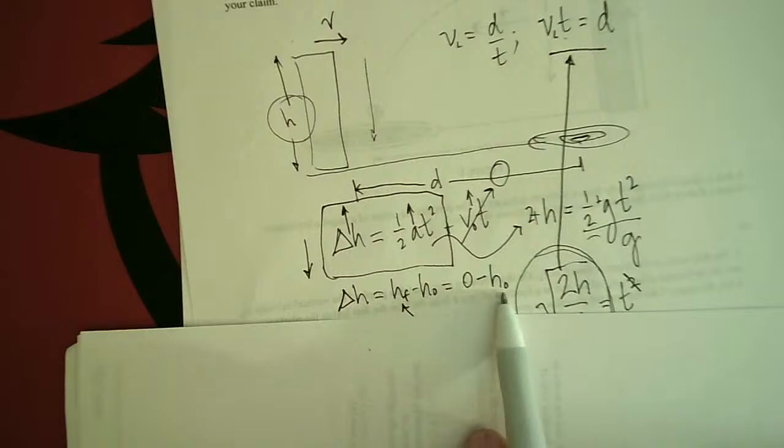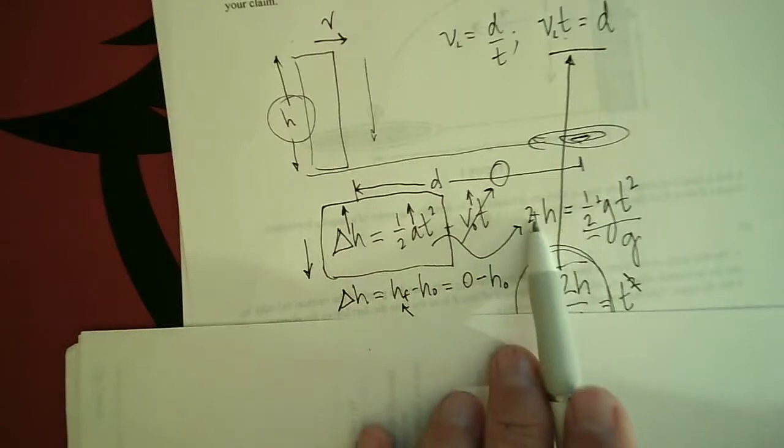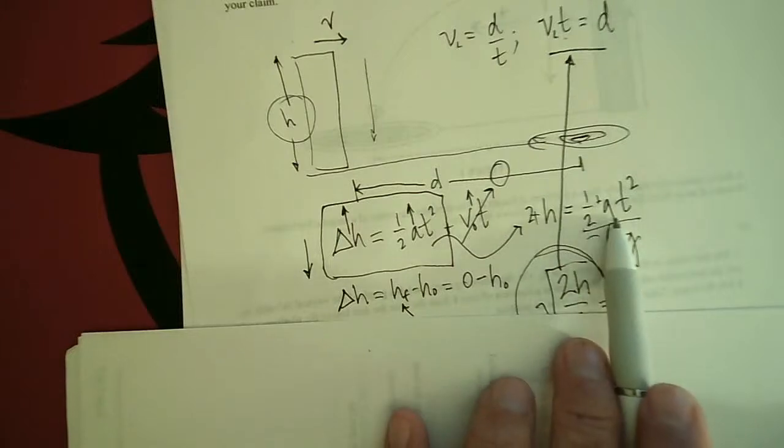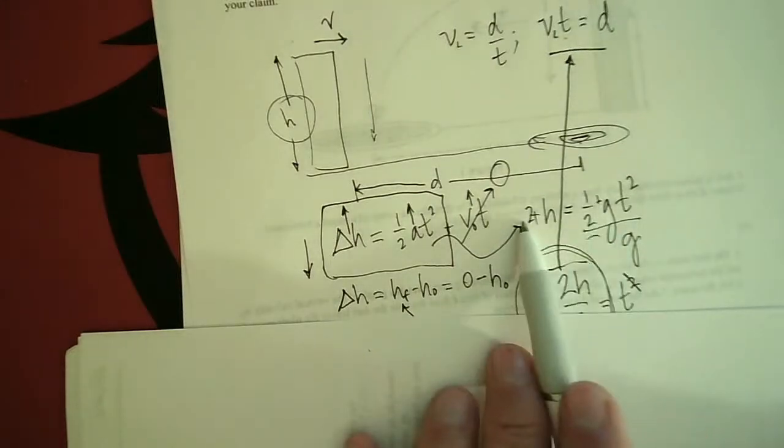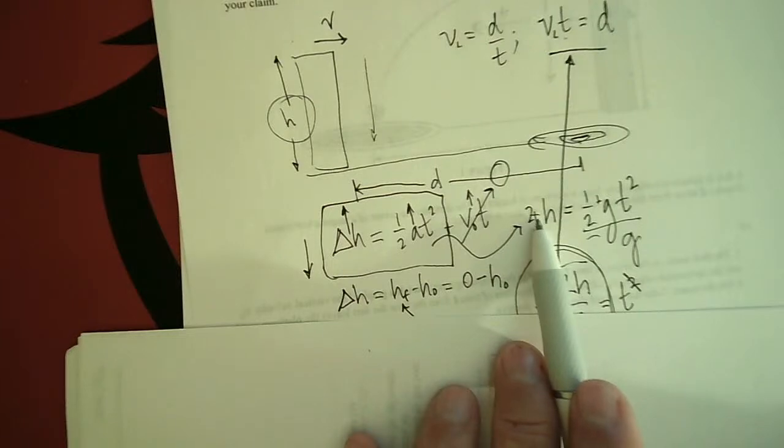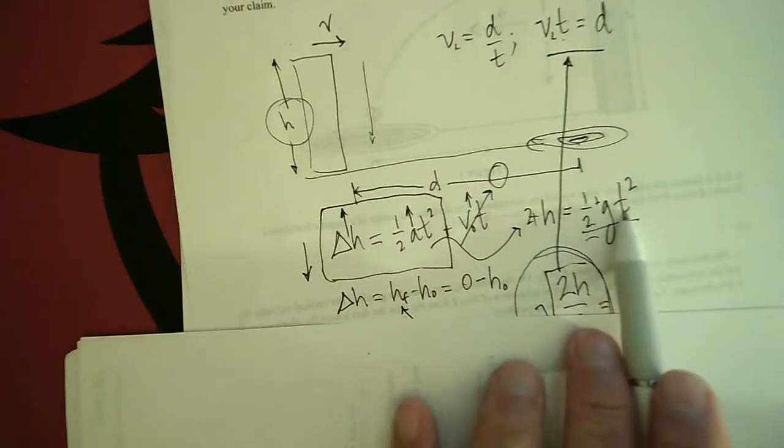So that is 0 minus H initial. So that is going to be negative H. And then G over here is negative G, negative 9.8, so we have a negative sign and a negative sign and we can multiply both sides by negative 1. So now we have H is equal to one half GT squared.